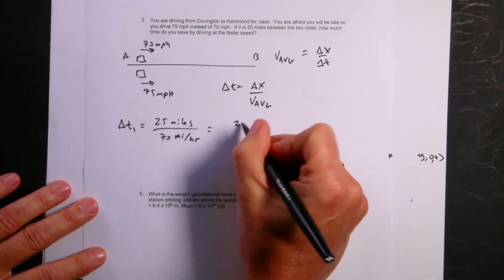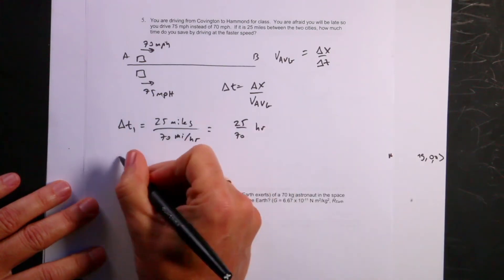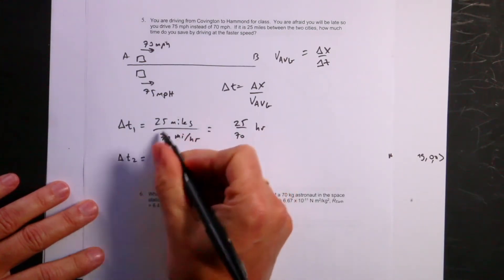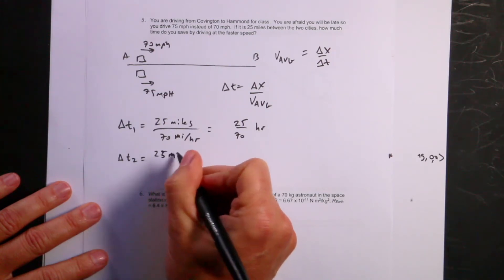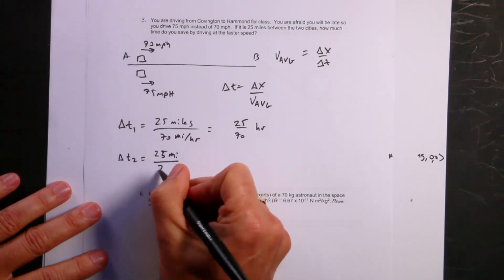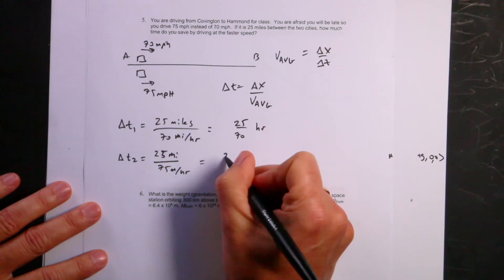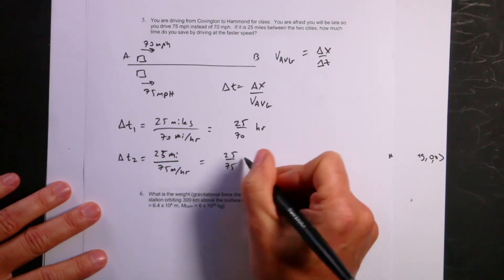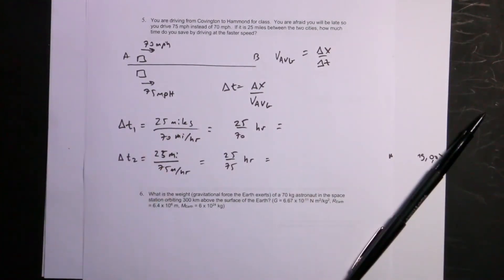Delta t2 is going to be 25 miles over 75 miles per hour. And that's going to be equal to 25 over 75 hours. So let's convert that into hours and minutes.